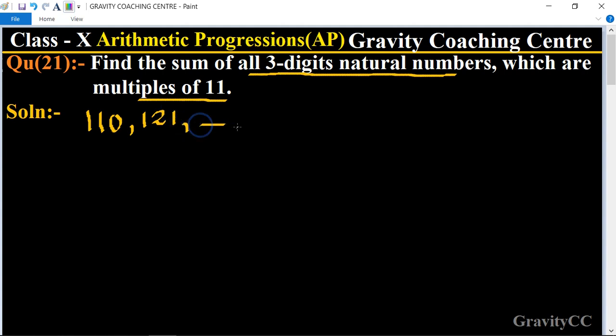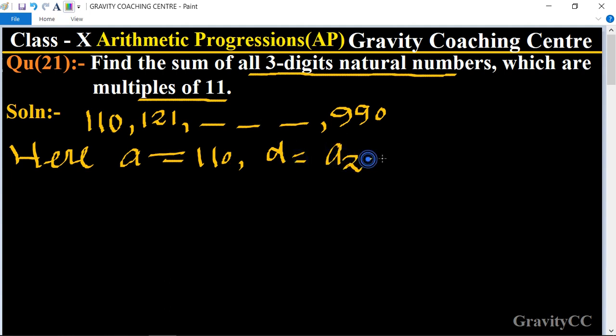Dot dot dot to the last one is 990. So here a equals 110 and d equals a2 minus a1 equals 121 minus 110 equals 11. And the nth term is given as an equals 990.